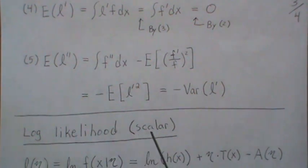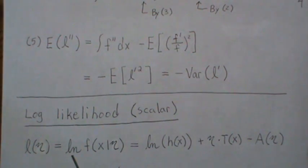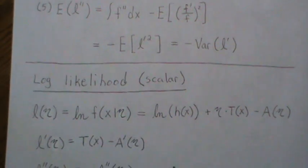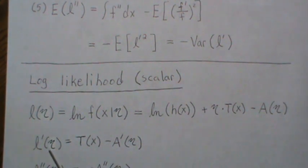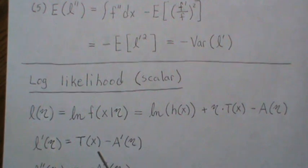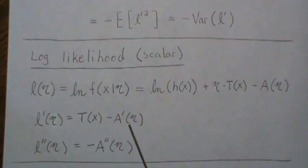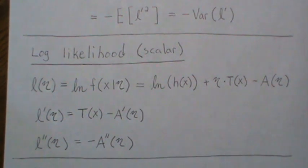Now let's look at the log likelihood in the scalar case. The log likelihood is the log of the density, which in canonical form simplifies because the log cancels with the exponent e. Taking the first derivative with respect to eta: the h(x) term is zero, the derivative of the eta·T(x) term is just T(x), and then minus a'(eta). The second derivative is just minus a''(eta), the second derivative of the log partition.